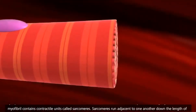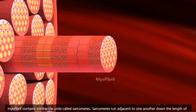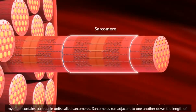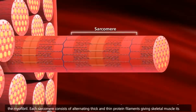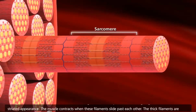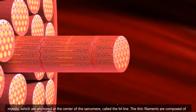Muscle fibers are composed of many myofibrils. A myofibril contains contractile units called sarcomeres. Sarcomeres run adjacent to one another down the length of the myofibril. Each sarcomere consists of alternating thick and thin protein filaments, giving skeletal muscle its striated appearance. The muscle contracts when these filaments slide past each other.